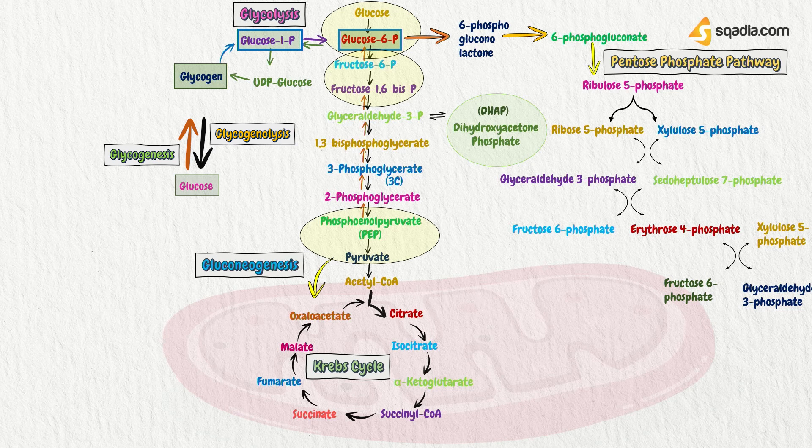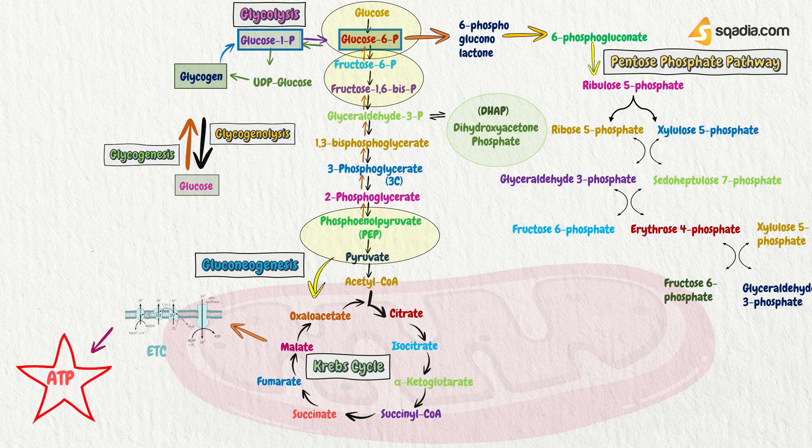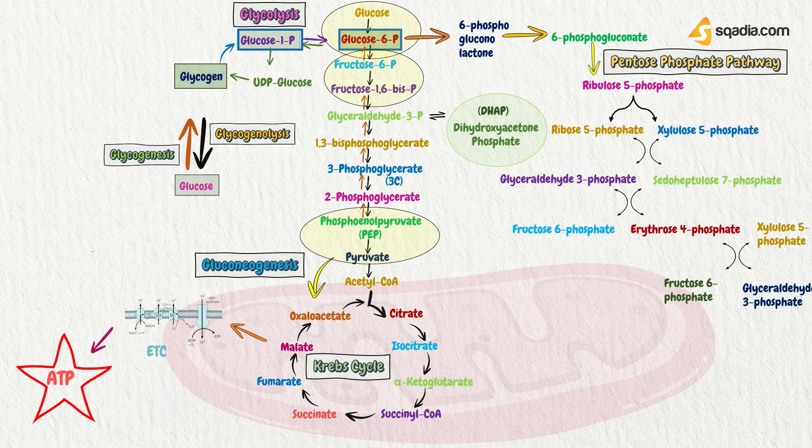Now, after all these metabolic pathways, what happens is that ultimately we need to produce ATP. So, from Krebs cycle, there is generation of FADH2 and NADH molecules that further go into electron transport chain and generate ATP molecule. So, you can see that all of these mechanisms are somehow interrelated to each other.